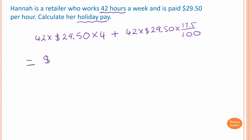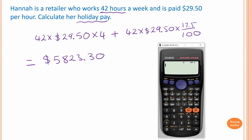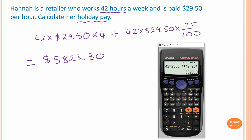Let's verify: 42 times 29.5 times 4, plus 42 times 29.5 times 4 times 17.5 over 100. That gives exactly the same answer — five thousand eight hundred and twenty-three dollars and thirty cents. Both methods confirm the result.